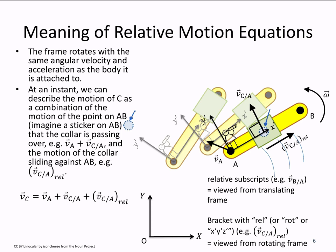So the motion of the sticker is described by vA plus vC with respect to A. And the motion of the collar with respect to the sticker is described by this new term vC with respect to A relative.